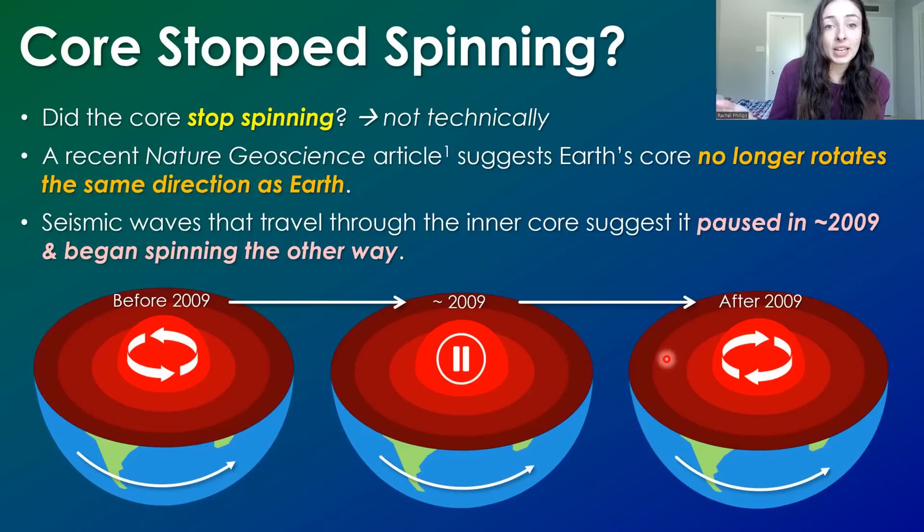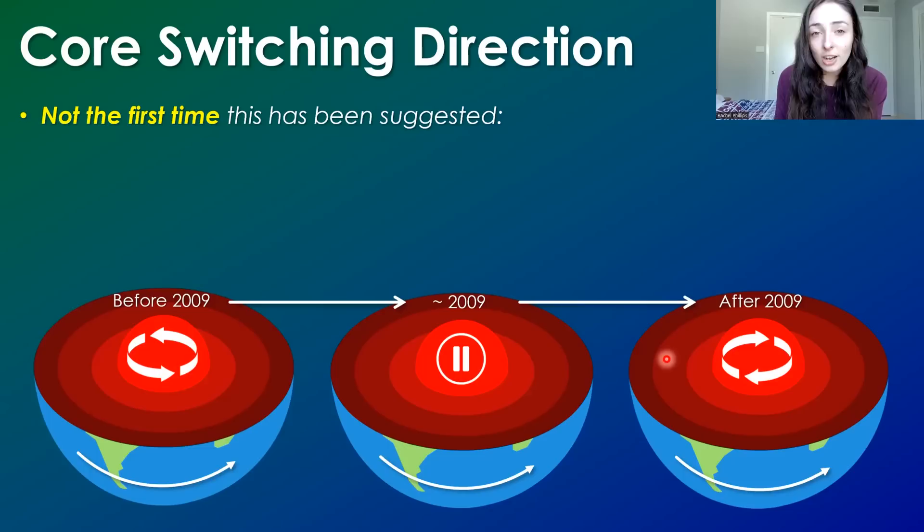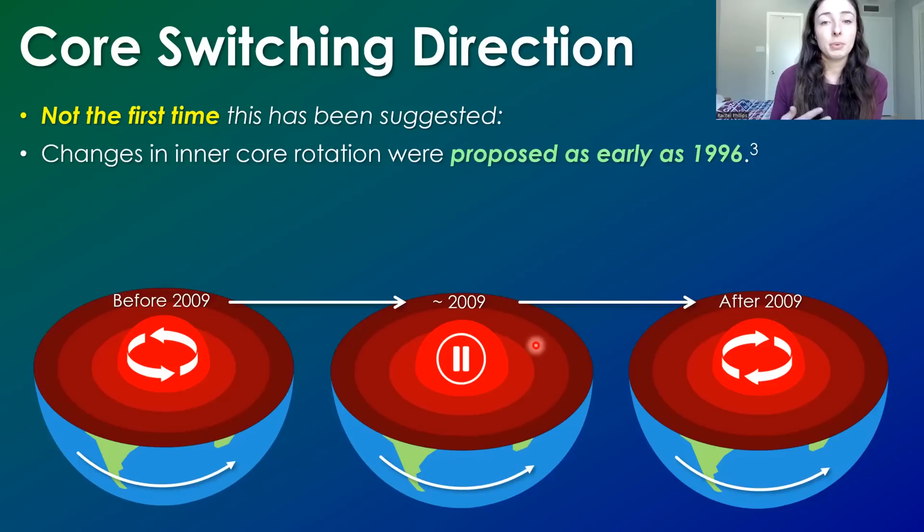But no, it is not currently stopped. It is still spinning right now. It's just not spinning the same direction as Earth, at least according to the data presented in this paper. However, this is not the first time that scientists have suggested that the core has stopped spinning and spun a different direction. Changes in inner core rotation have been proposed as early as 1996, or at least that's the earliest that I could find it. And you can find that reference listed as number three in the description box below.